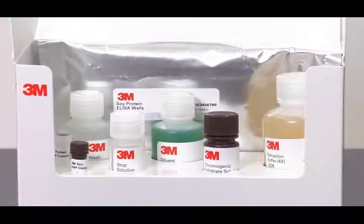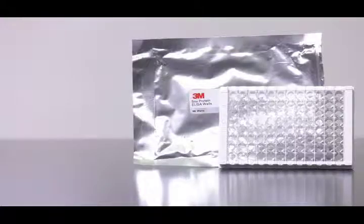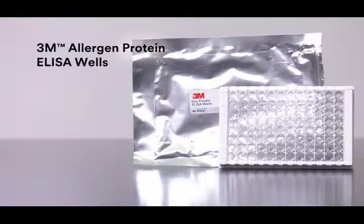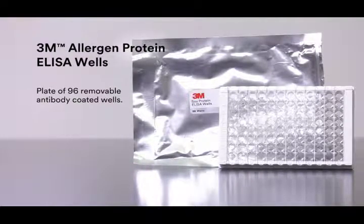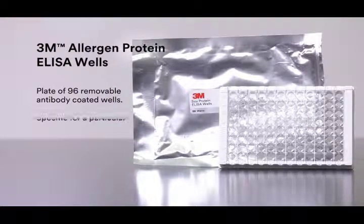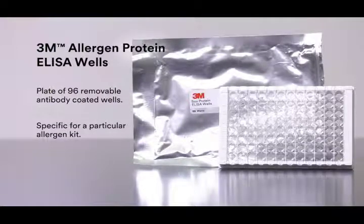The 3M Allergen Protein ELISA kit contains the following components. One 3M Allergen Protein ELISA wells. The foil bag contains a plate of 96 removable antibody coated wells that are specific for a particular allergen kit.